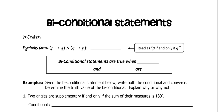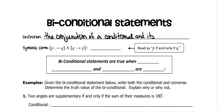Today we're going to work on biconditional statements, which is the conjunction of a conditional and its converse. All it means is that both the conditional statement has to be true and its converse also has to be true — or the way I like to say it in regular words is that it can go both forward and backwards and be true either way.